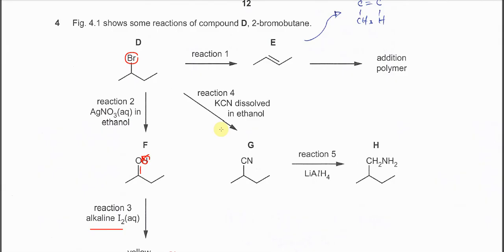Reaction 4 is just a substitution reaction. The KCN or the cyanide will substitute the bromine to form the nitrile and after that it undergoes reaction 5. So it will add hydrogen. This carbon adds 2 hydrogen, this nitrogen adds 2 hydrogen to form amine. Now these are the 5 reactions that are involved.